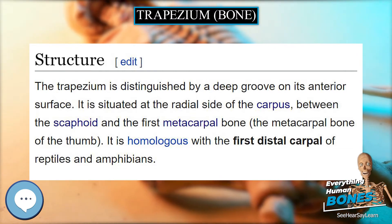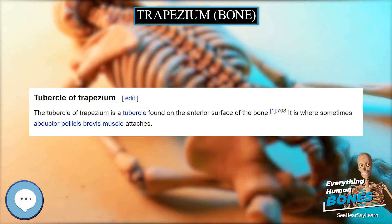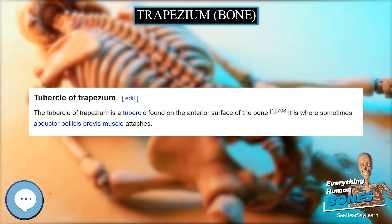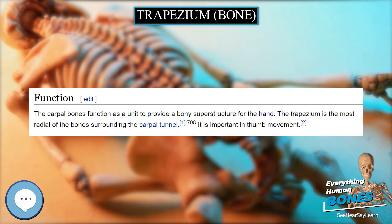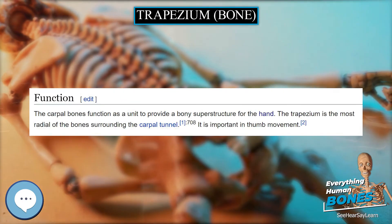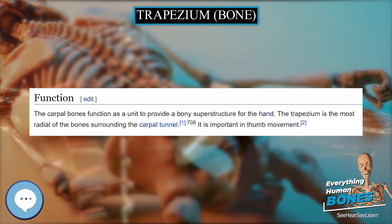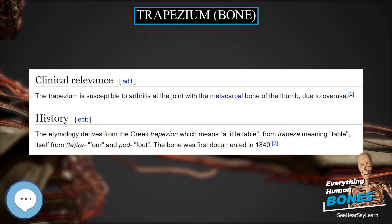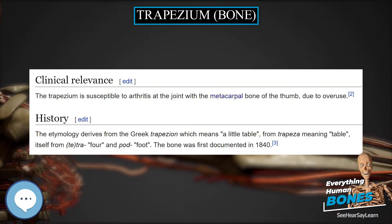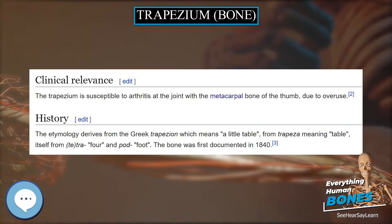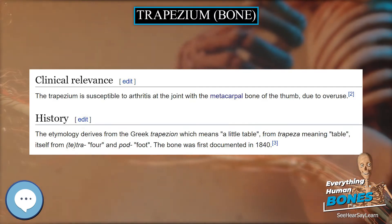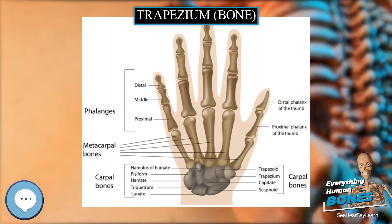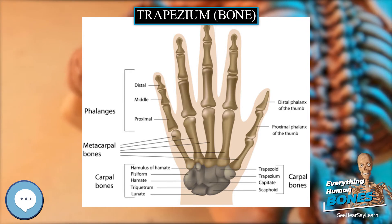The palmar surface is narrow and rough. At its upper part is a deep groove running from above obliquely downward and medialward; it transmits the tendon of the flexor carpi radialis and is bounded laterally by an oblique ridge. This surface gives origin to the opponens pollicis and to the abductor and flexor pollicis brevis.